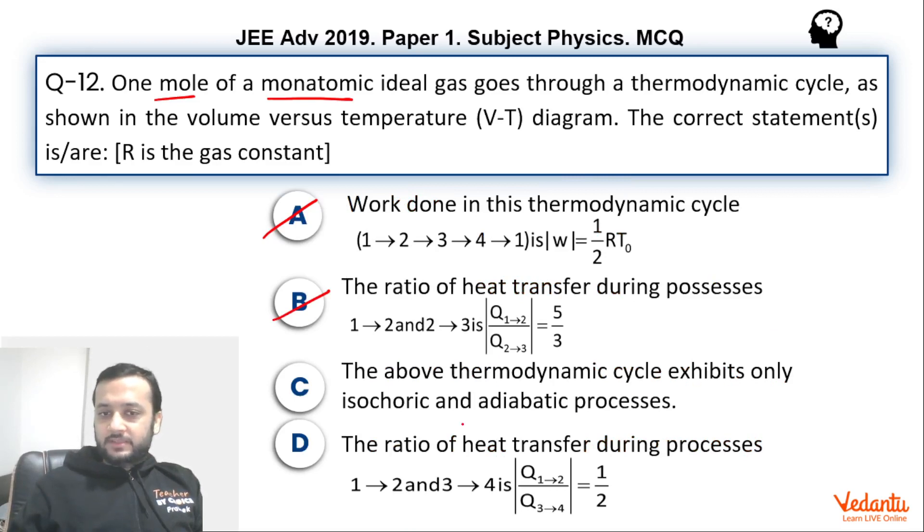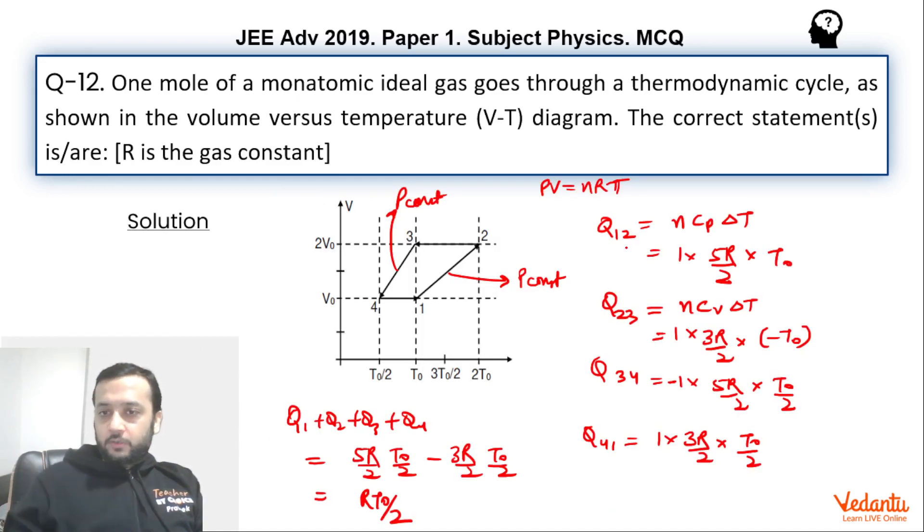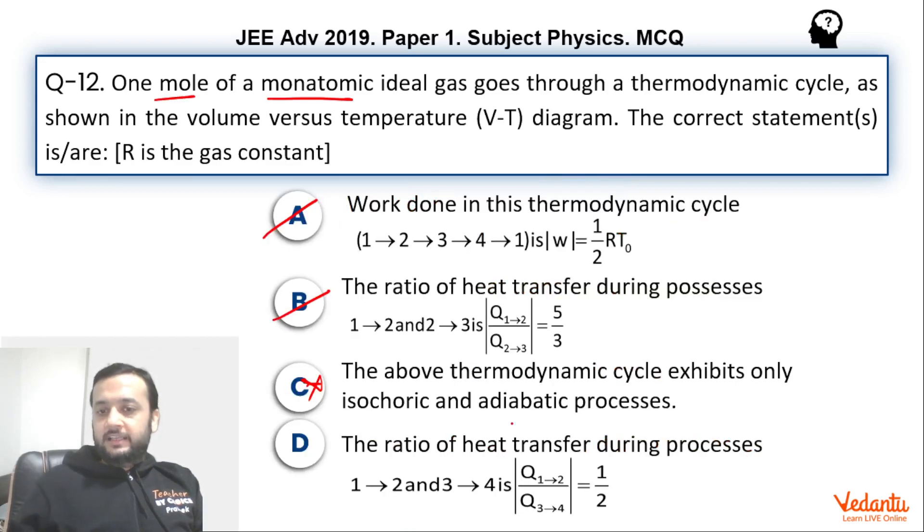The above thermodynamic cycle exhibits only isochoric and adiabatic—this is wrong, because it exhibits isochoric and isobaric. The ratio of heat transfers during the process 1-2 and 3-4 is half. 1-2 is this and 3-4 is this, so it is not half, it is actually 2, because this is T0 and this is T0 by 2. So actually it will become 2. So you have to be slightly careful here. It is also wrong.